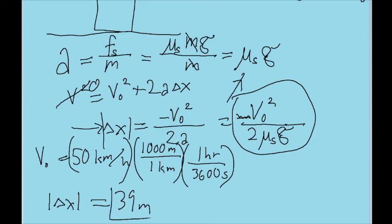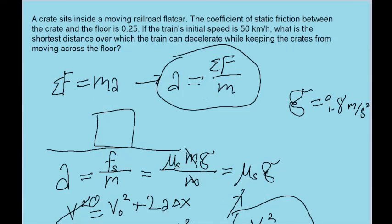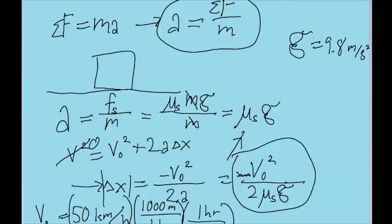So this is the shortest distance over which the train can begin decelerating if we want to avoid the crate from sliding on the floor of the car. That is all for this problem.